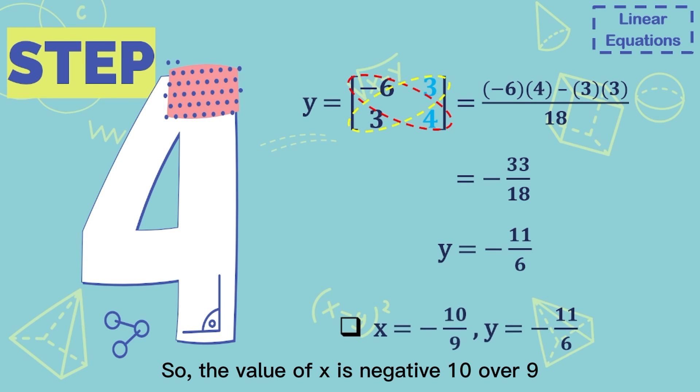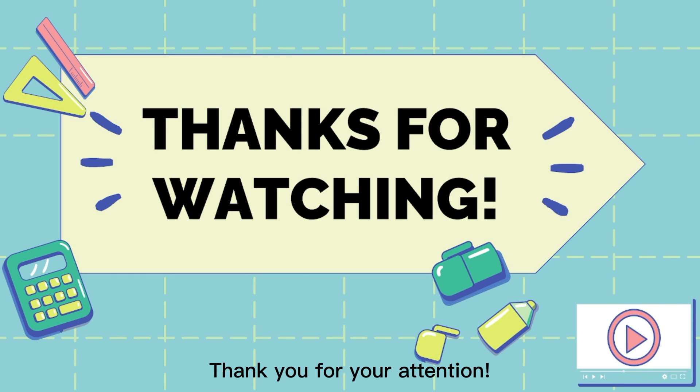So the value of x is -10 over 9, and the value of y is -11 over 6. Thank you everyone for your attention.